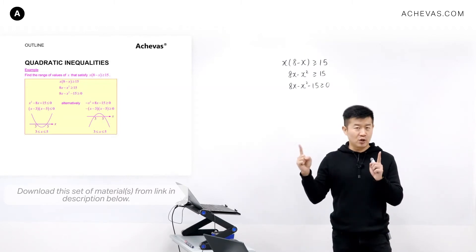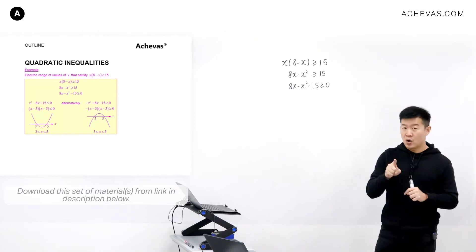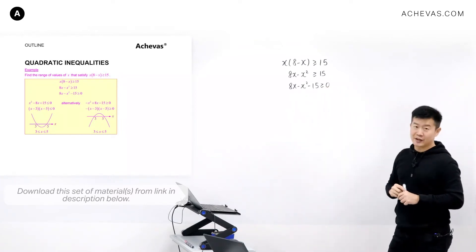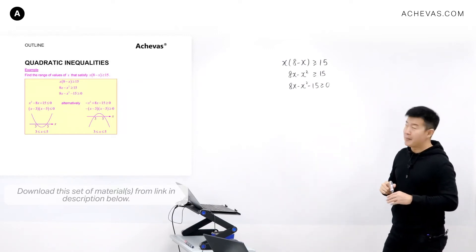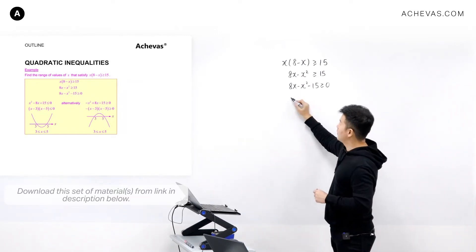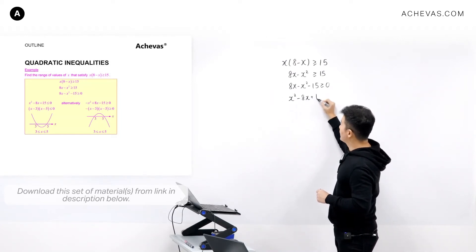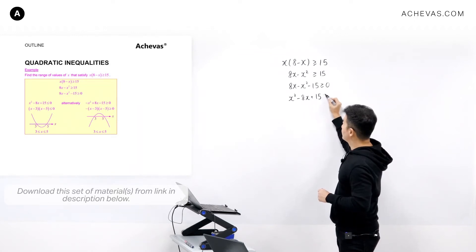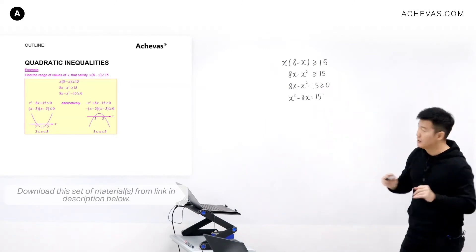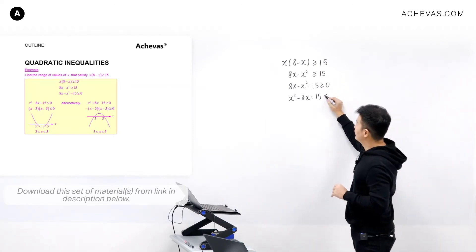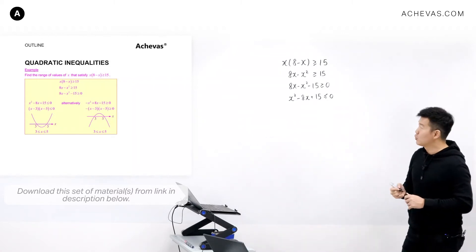So I'm going to multiply the whole inequality throughout by minus 1. Minus x squared gives me x squared, this will be minus 8x, and this becomes plus 15. Is this bigger or equal to 0? No — because we multiplied by minus 1, we have to swap the inequality symbol. So it becomes less than or equal to 0.